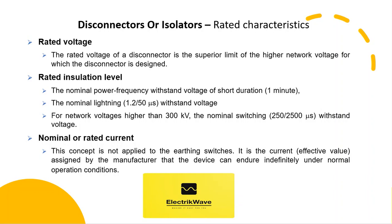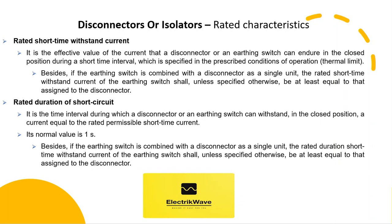The nominal or rated current concept is not applied to earthing switches. It is the effective value of current, assigned by the manufacturer, that the device can endure indefinitely under normal operation conditions. The rated short-time withstand current is the effective value of current that a Disconnector or Earthing Switch can endure in the closed position during a short time interval, under prescribed conditions of operation — the thermal limit. If the earthing switch is combined with a Disconnector as a single unit, the rated short-time withstand current of the earthing switch shall, unless specified otherwise, be at least equal to that assigned to the Disconnector.